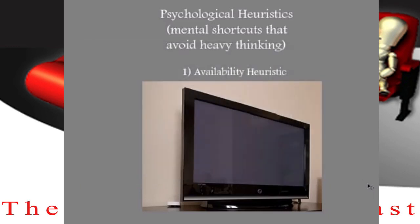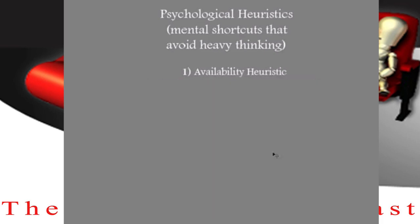Probably a wrong one, right? Heuristics often lead us to the incorrect decision — not always, but in this case, probably they will. So if you have seen something on TV and that's what you're going to use to make your decision, that's not so good. You're probably wrong. But it's hard to know what the probabilities are. So availability — watch out for that tendency to draw from what you recently saw.